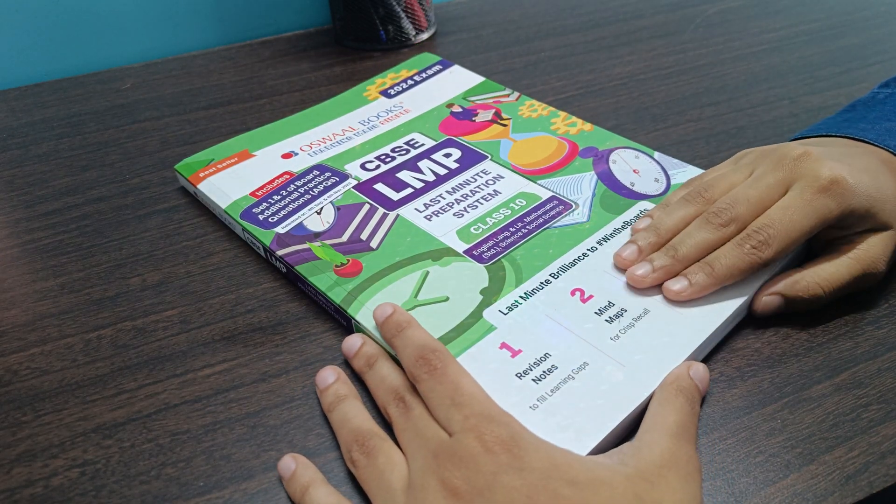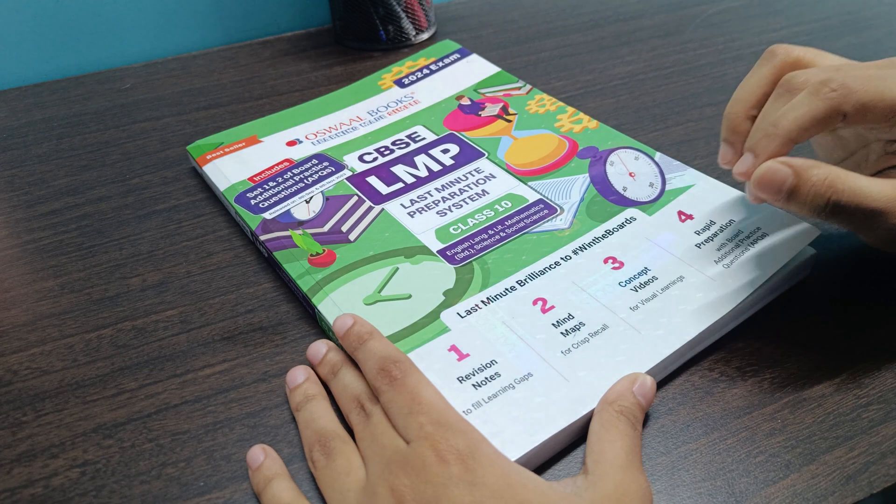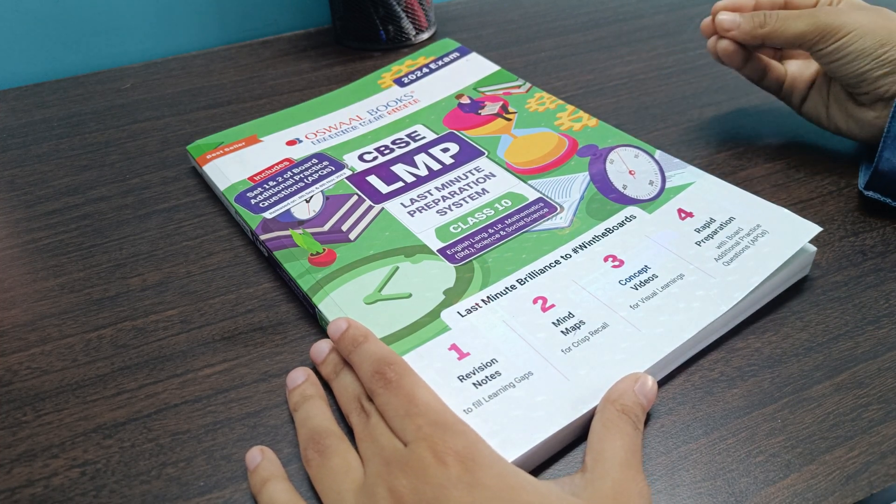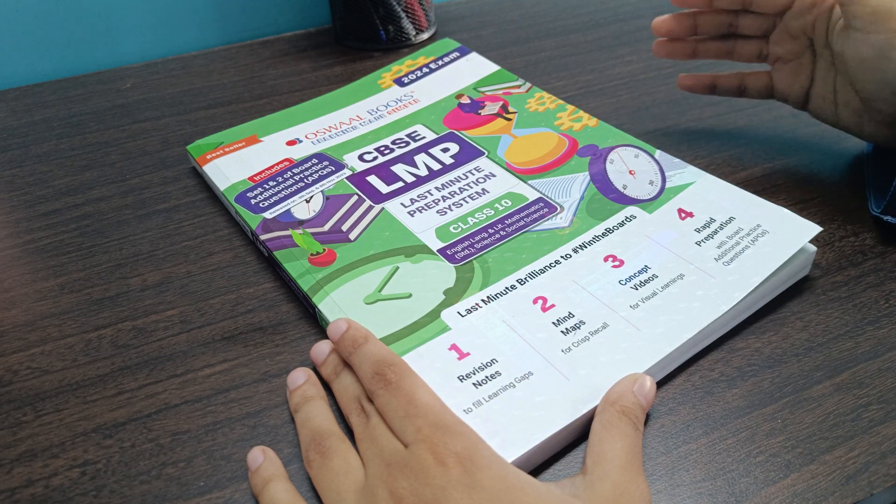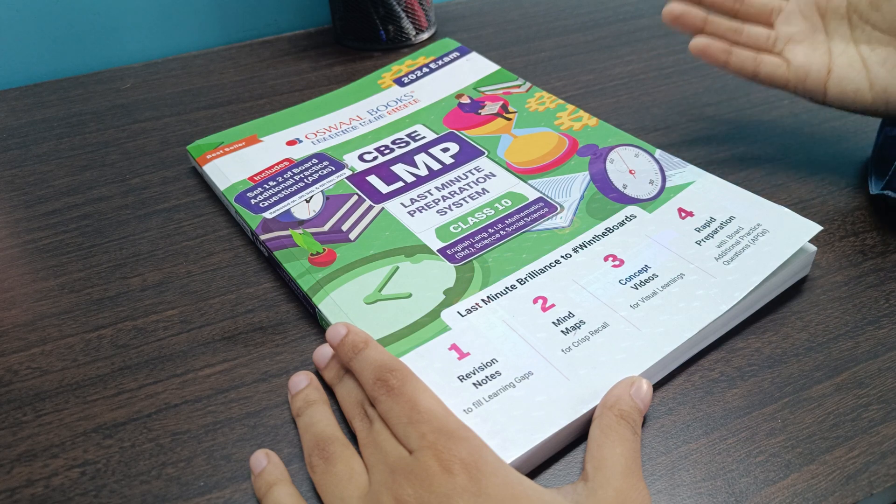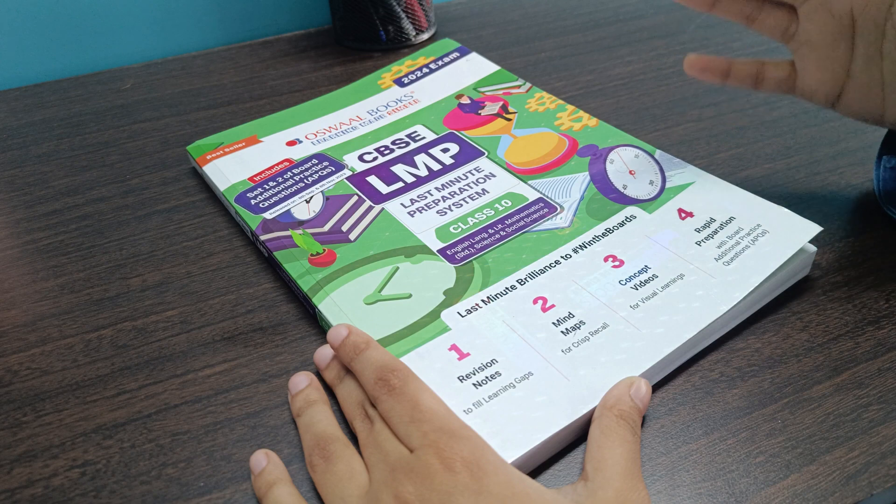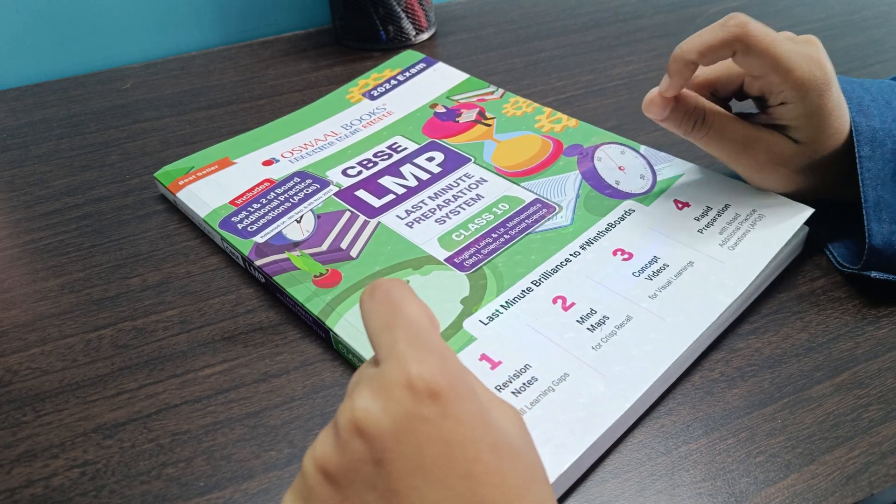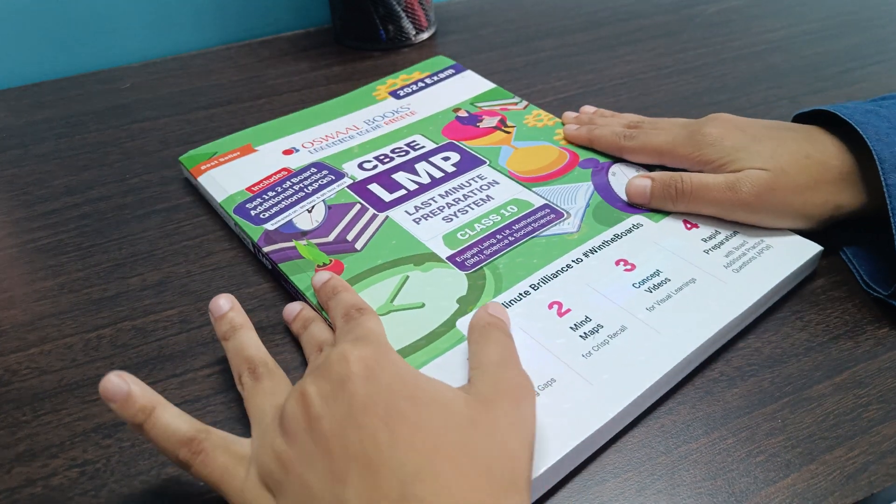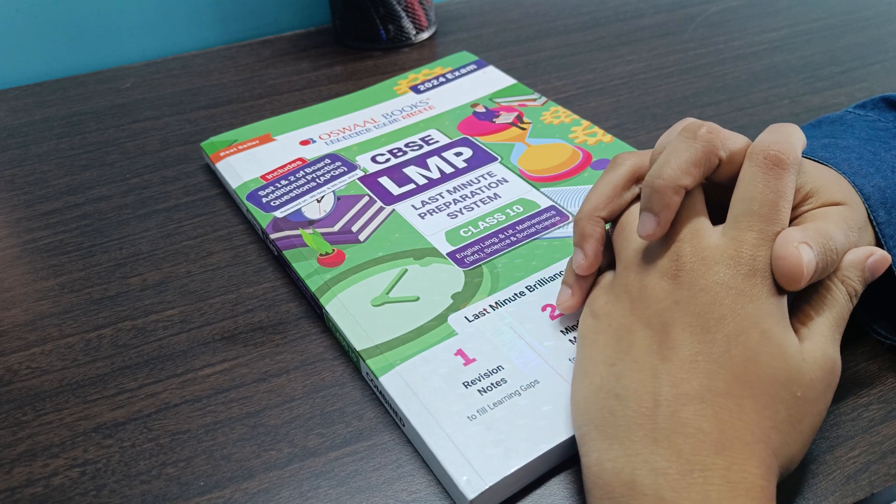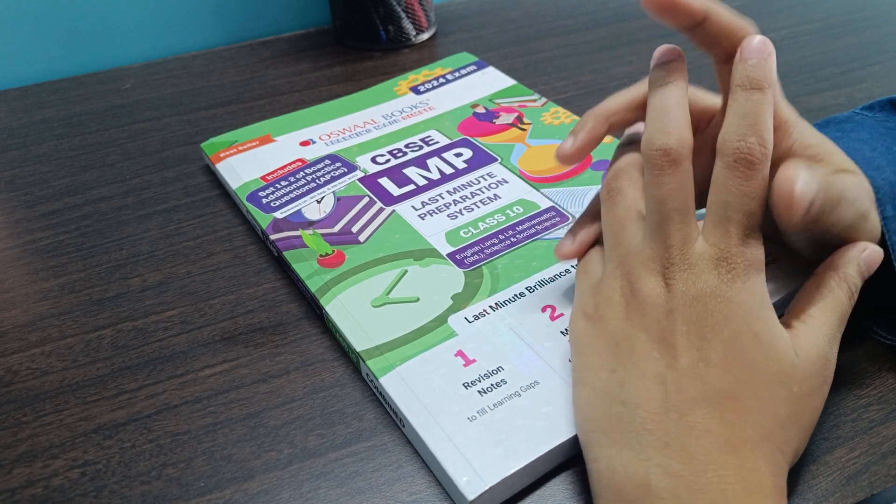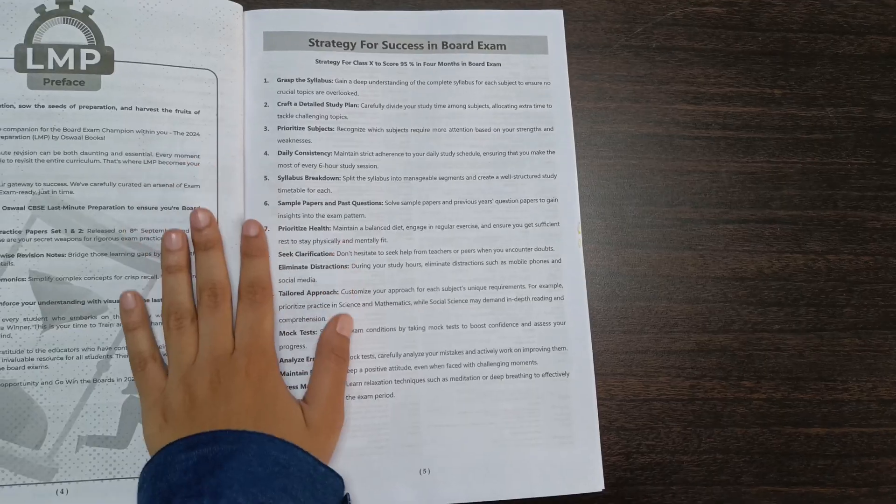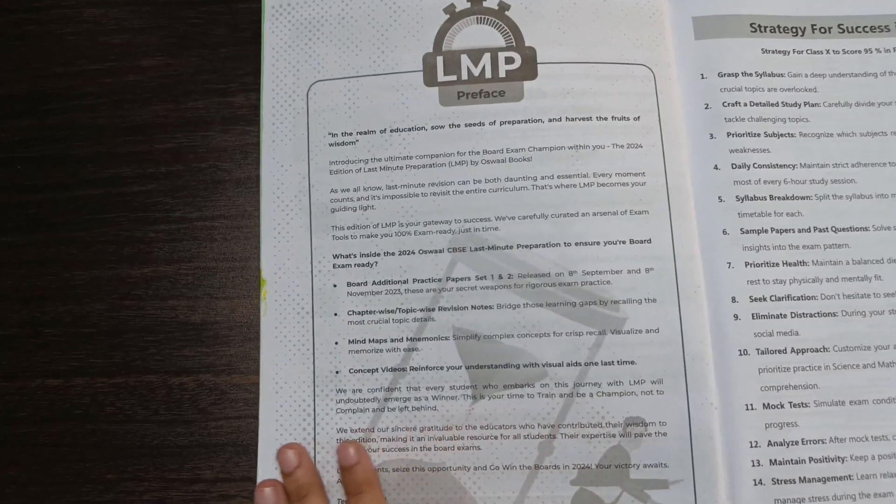Before moving into today's video, I wanted to talk about this amazing book by Osval Books, which is the Last Minute Preparation System. The boards are arriving very soon and the pre-boards are either here or knocking on the door. We have very few gap days between our exams, and in those gap days it's impossible to read the NCERT from scratch again. But we also have to revise every single concept and topic of the NCERT thoroughly and efficiently. At this crucial period, this book is going to be our savior because it's the perfect book for your last sprint preparation during boards or pre-boards. This book is at a 75% discount today and you'll get the link in the description box below.